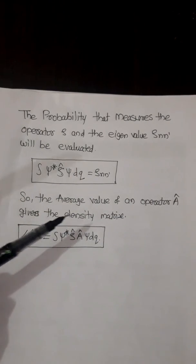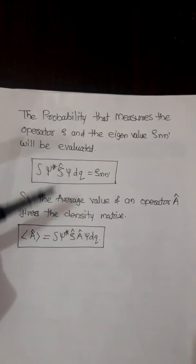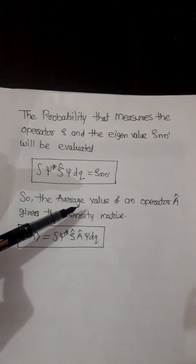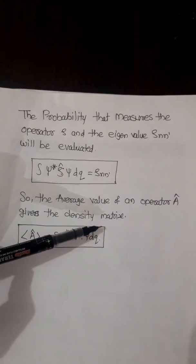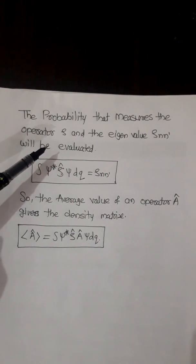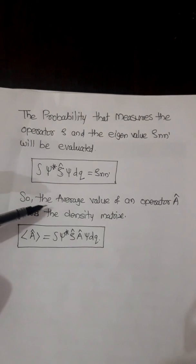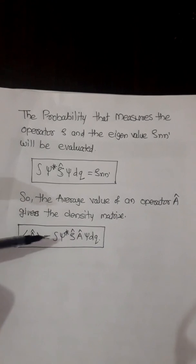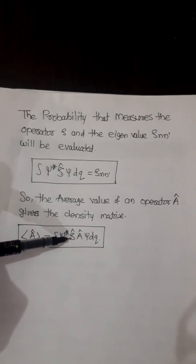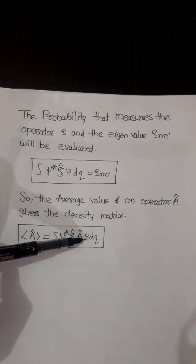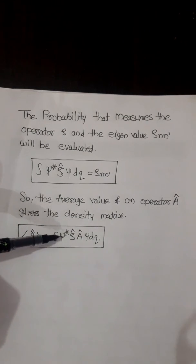The average value of any operator A gives the density matrix. Considering A as any operator with state ψᵢ, the average value is: Â = ∫ ψ* ρ̂ Â ψ dq. This expression is the density matrix of the operator A, and this phenomenon is called the density matrix.